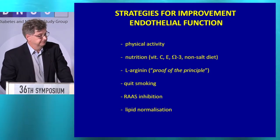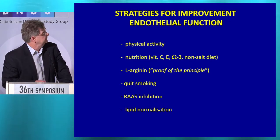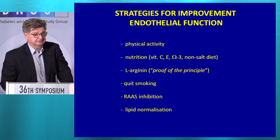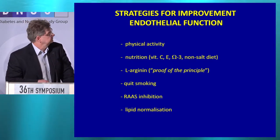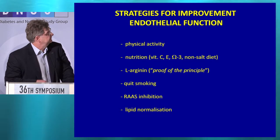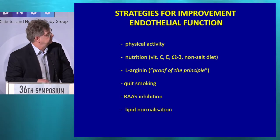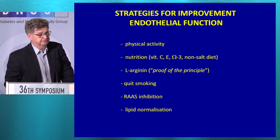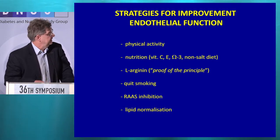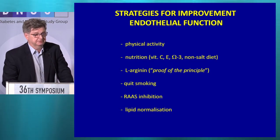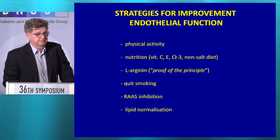What are the strategies for improvement of endothelial function? The first one is physical activity — we are human beings, we have to move. Then nutrition, vitamins, and other substances. Then L-Arginine as a NO donor, which is proof of principle for how it works. Then quitting smoking, then RAS inhibition — inhibition of the renin-angiotensin-aldosterone system — and normalization of lipids, not only hypercholesterolemia but dyslipidemia.